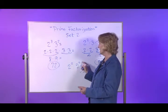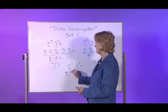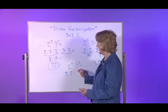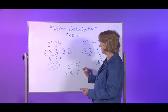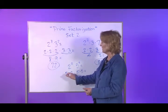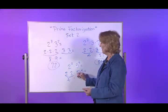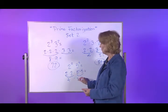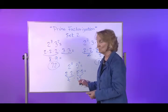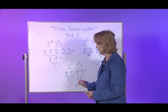This one, 2 to the second times 5 to the second. 2 times 2. 5 to the second would be 5 times 5. 2 times 2 is 4. 5 times 5 is 25. So we get 4 times 25, and that's 100.